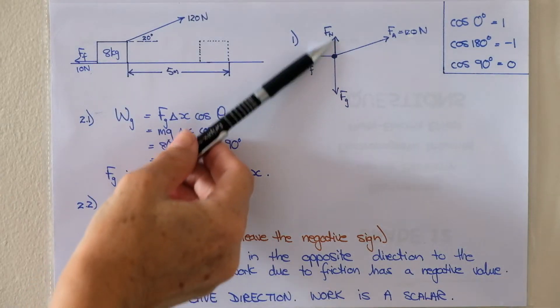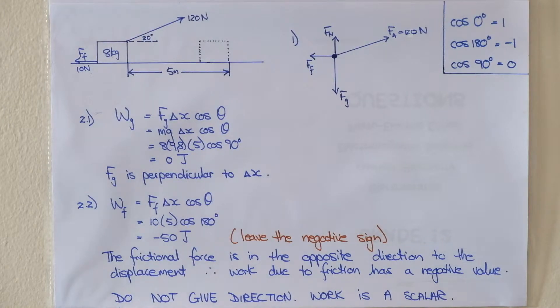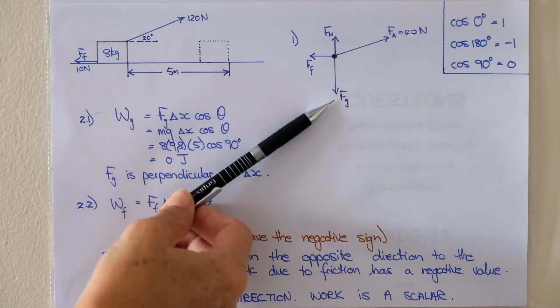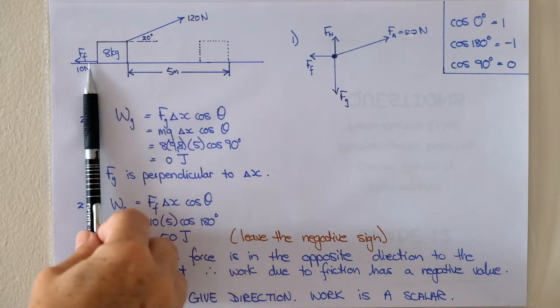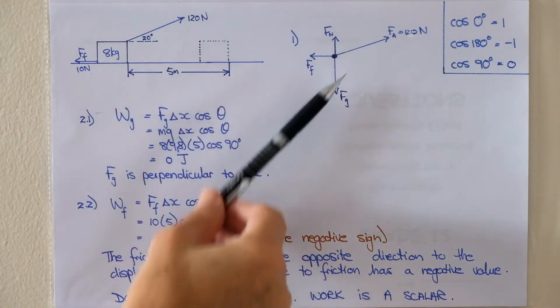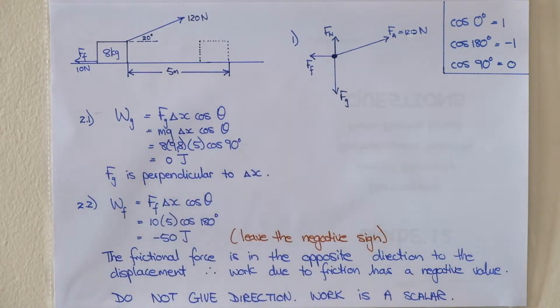We have our normal force which is always perpendicular to a surface. Be careful if your object is on an incline surface your normal force will not be vertically upwards. Gravitational force is vertically downwards because it's on a flat surface. The surface is horizontal so the gravitational force is downwards.